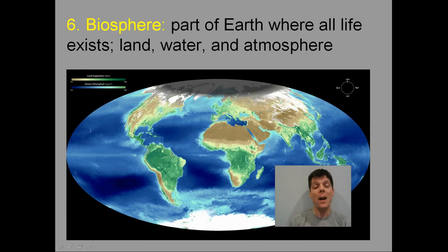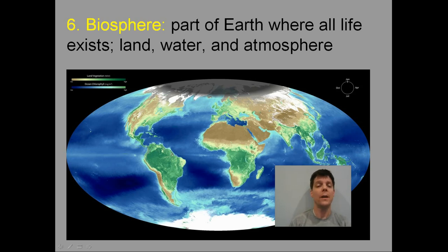The final level of organization in ecology is the biosphere. This is the part of Earth where life can exist, and it includes land, water, and the atmosphere.